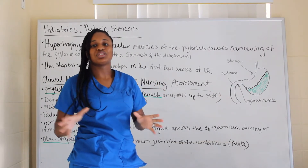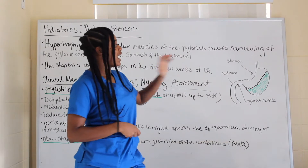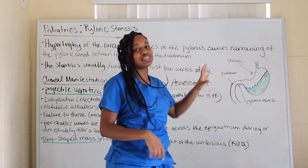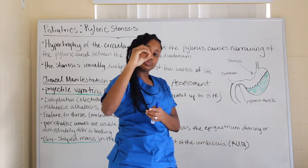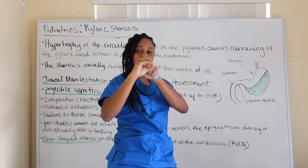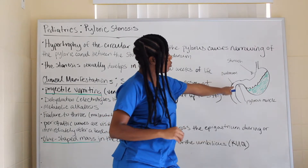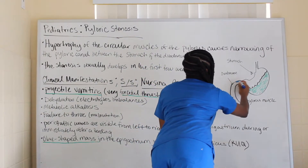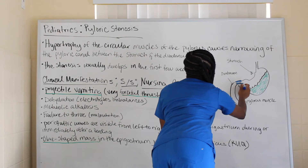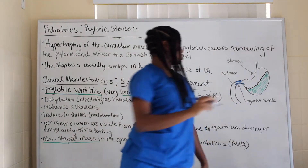For visual learners, I have a diagram here to represent what exactly is going on. This right here is the stomach, this is the duodenum — the first part of the small intestines — and the pylorus muscle is around this region here. It's pretty much circular, so think of it in that aspect.